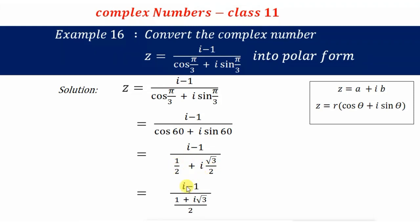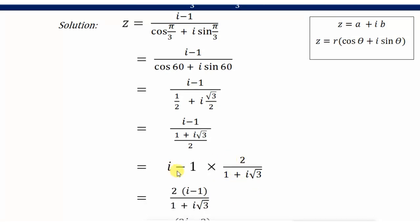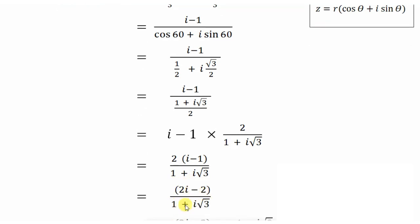Since the denominators are the same, we can directly add the numerators, giving (i − 1) / ((1 + i√3)/2). When we take this denominator term to the numerator it becomes reciprocal, that is (i − 1) × 2 / (1 + i√3). Multiplying gives (2i − 2) / (1 + i√3).